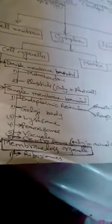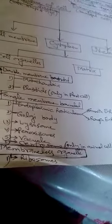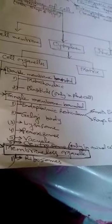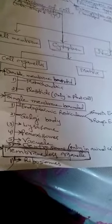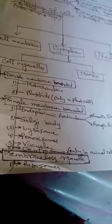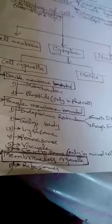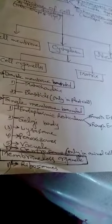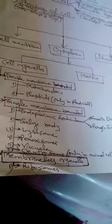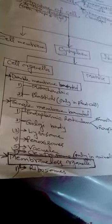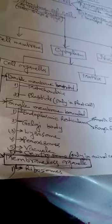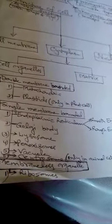Then, second part is cytoplasm. Cytoplasm also categorizes into matrix and cell organelles. Matrix is the part, liquid part, made up of water, inorganic materials. It is the medium in which many small cell organelles scatter.